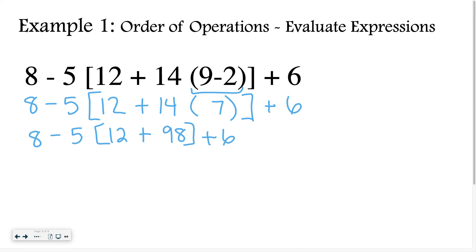Then I copy down the rest of the problem. Inside our parentheses we have 98 plus 12, so that becomes 110. I copy down everything else just the same. Now just like when I had 14 parentheses 7, I have 5 parentheses 110. So I'm going to do 5 times 110, which is 550. I copy down the rest of the problem. Then I have 8 minus 550, which is negative 542 plus 6.